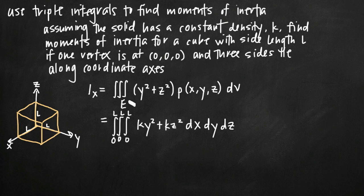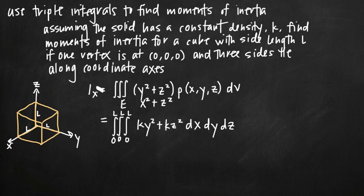For the moment of inertia about the y-axis, I_y, we set up the same triple integral with limits 0 to l, substituting k for the density function, but multiply by x² + z² — the two variables other than y. For I_z about the z-axis, we use x² + y² — the two variables other than z — multiplied by constant density k, with the same limits and order dx dy dz.